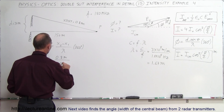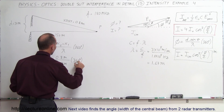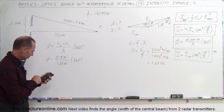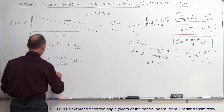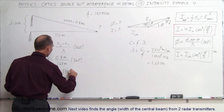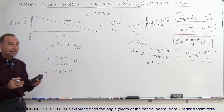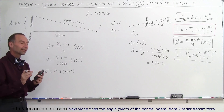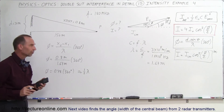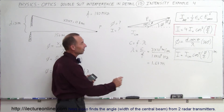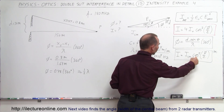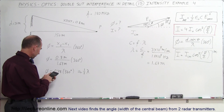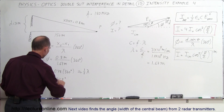Plugging in 1.67 meters for the wavelength and multiplying by 360 degrees: 0.8 divided by 1.67 equals approximately 0.48, so phi equals 0.48 times 360 degrees. Notice that's almost half a phase, so we'd expect the intensity to be very close to zero compared to the central max intensity. Calculating: phi equals 172.8 degrees — that's the phase difference.